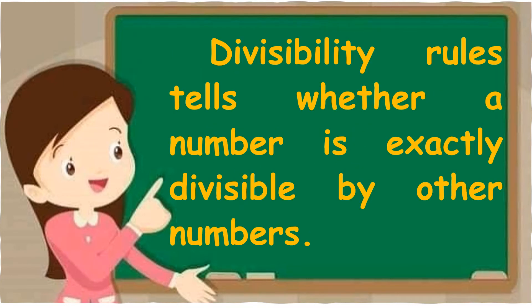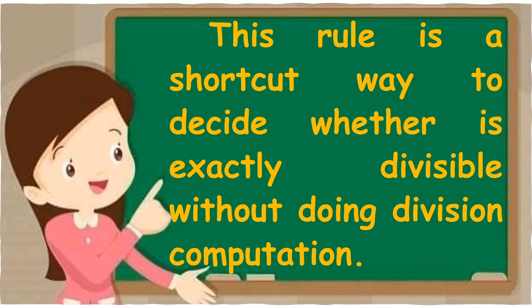Divisibility rules tell whether a number is exactly divisible by other numbers. This rule is a shortcut way to decide whether it is exactly divisible without doing division computation. Itong divisibility rule ay isang strategy na kung saan malalaman mo ang isang number ay exactly divisible nang hindi ginagamit ang division computation.